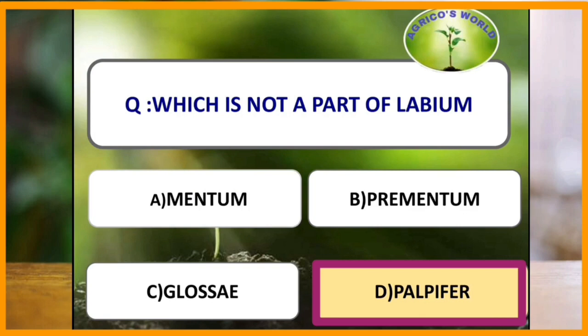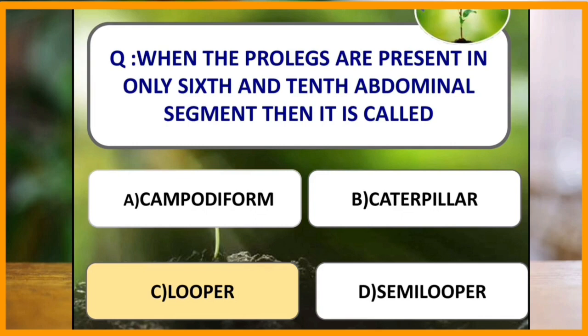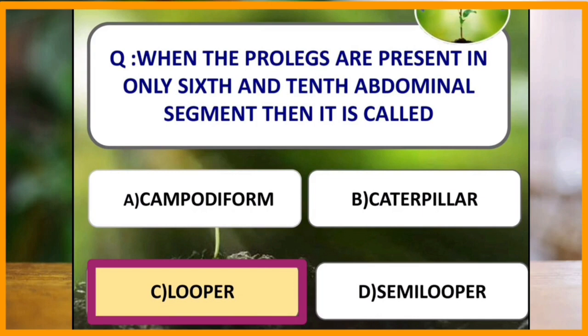Number of stylets in the head louse: head louse has three stylets. When the prolegs are present only in the sixth and the tenth abdominal segment, then it is called a looper, because during walking the insect body forms a complete loop-like structure, hence the name looper.